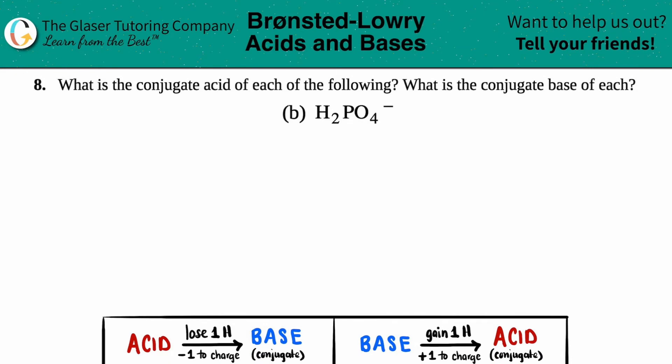Number eight, what is the conjugate acid of each of the following, and then what is the conjugate base of each? We have letter B. In this case, we have to find both the conjugate acid and the conjugate base of a single ion, H2PO4-.